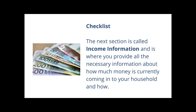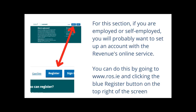The next section is called income information, and is where you provide all the necessary information about how much money is currently coming into your household and how. If you are employed or self-employed, you will probably want to set up an account with the Revenue's online service. You can do this by going to www.ros.ie and clicking the blue register button on the top right of the screen. If you have gathered all the information and documents you will need beforehand, it will be a fairly simple process. Ask somebody you trust for support if you like.